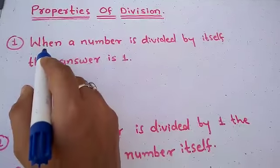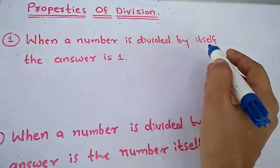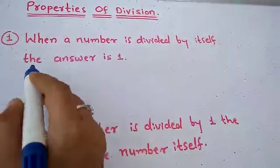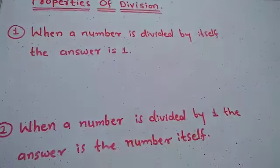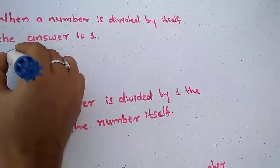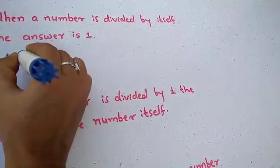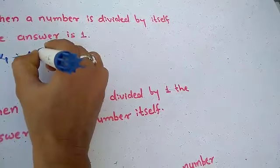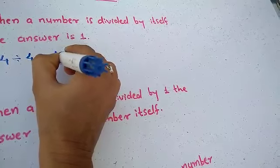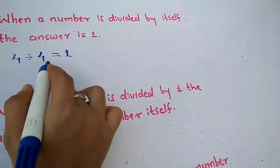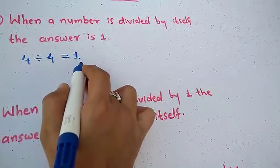Now the first property: when a number is divided by itself, the answer is 1. Let's look at an example — 4 divided by 4 is equal to 1. Any number divided by itself, the answer is always 1.